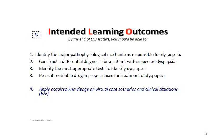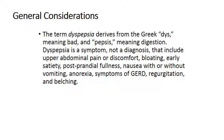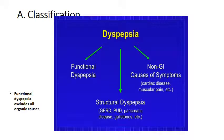Dyspepsia: 'dys' means bad, 'pepsis' means digestion, so dyspepsia means bad digestion. Dyspepsia is not a diagnosis; it is just a group of symptoms including upper abdominal pain or discomfort, bloating, early satiety, post-prandial fullness, nausea with or without vomiting, anorexia, symptoms of GERD, regurgitation, and belching. Dyspepsia can be classified into three types: functional dyspepsia, structural dyspepsia, or non-GI causes of symptoms like cardiac disease or muscular pain.